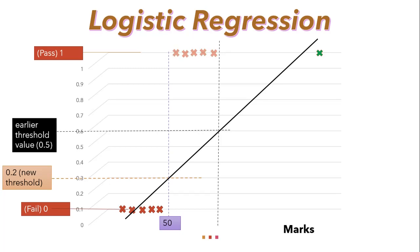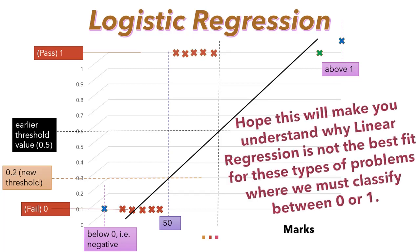Both linear regression and logistic regression give you a straight line, but those lines have different meanings. In linear regression it extrapolates and gives you values below 0 and above 1 for some data points, as shown on the screen. Whereas in logistic regression, instead of fitting a straight line or hyperplane, it uses the logistic function to squeeze the output of a linear equation between 0 and 1. This is why linear regression is not the best fit where we must classify between 0 or 1.